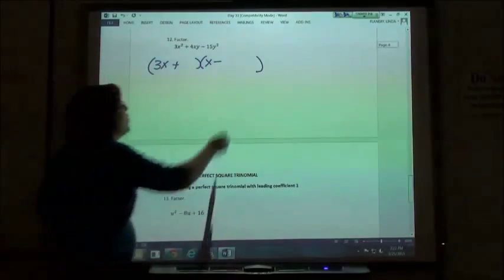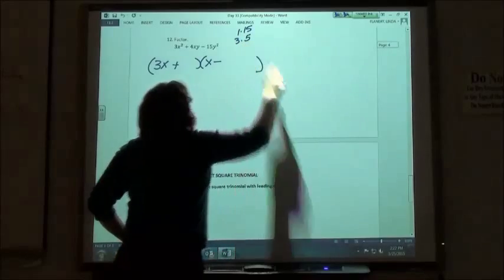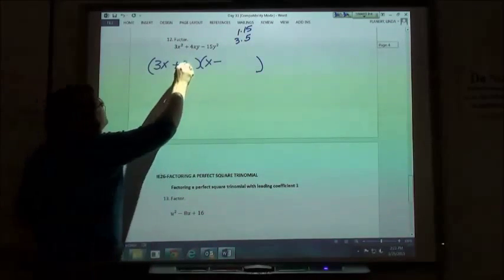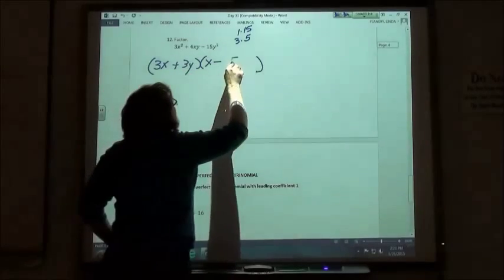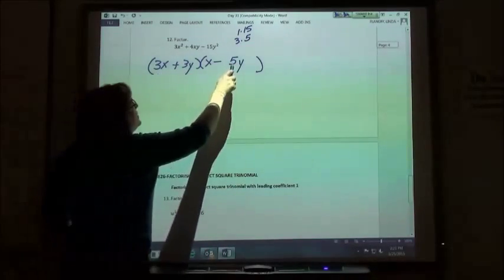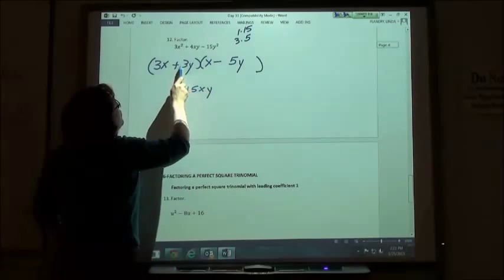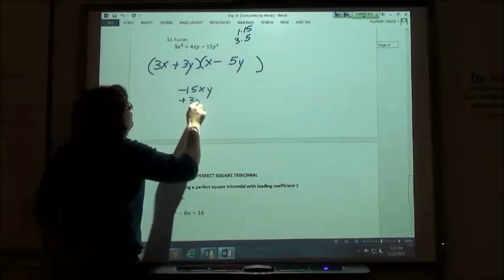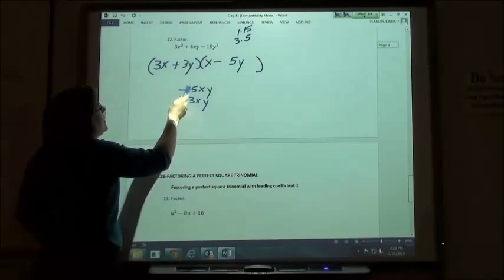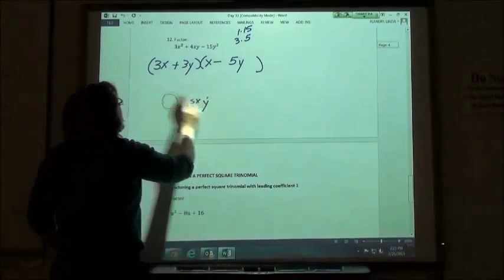Factors of 15y squared. Well, 15 is 1 times 15 or 3 times 5. Trying the 3 times 5 first, I'm going to put 3y and 5y and then I'm going to check. 3x times negative 5y would be negative 15xy. 3y times x is a positive 3xy and a negative 15 plus 3 is not 4. And so I've got to switch them around.